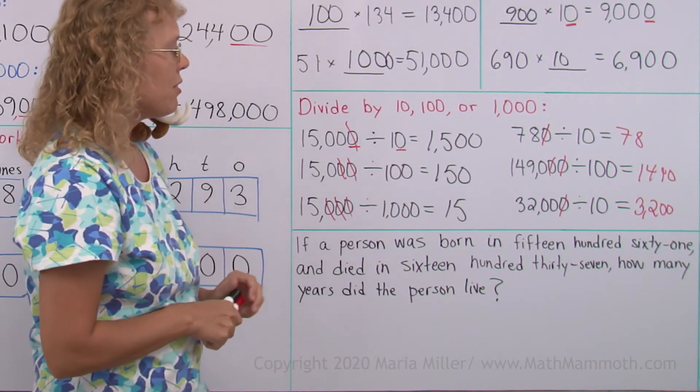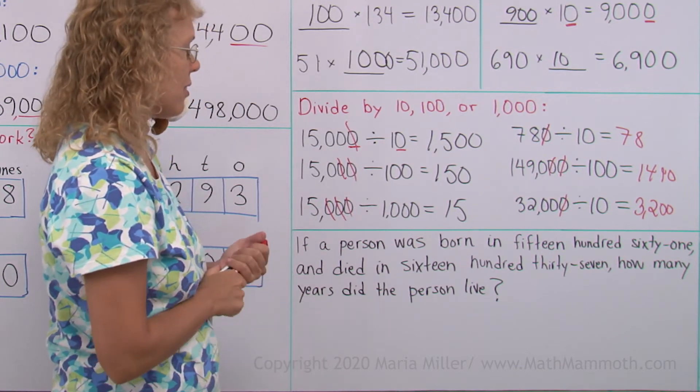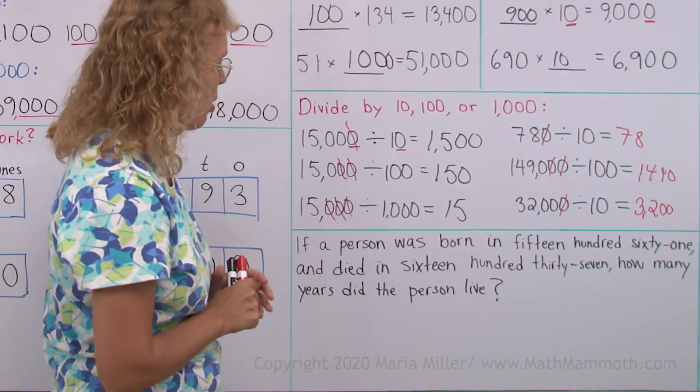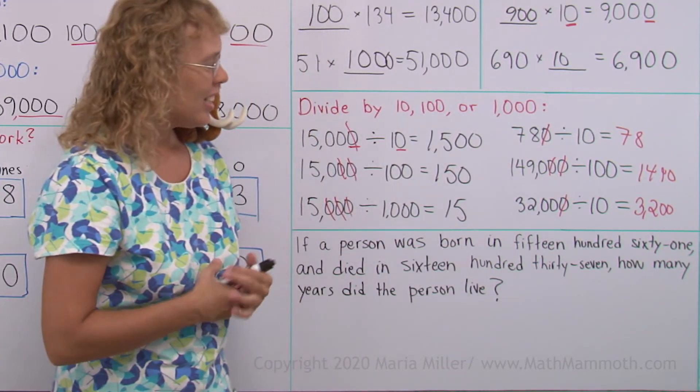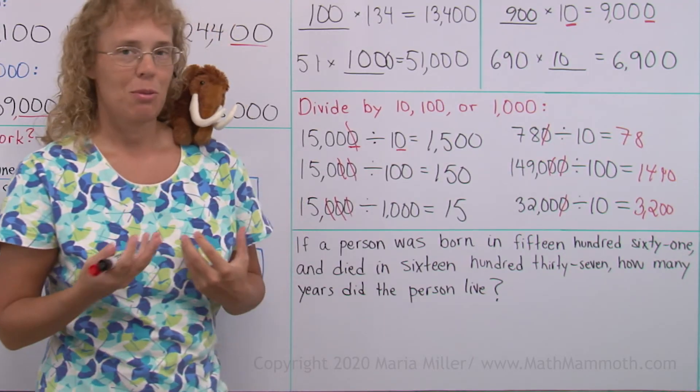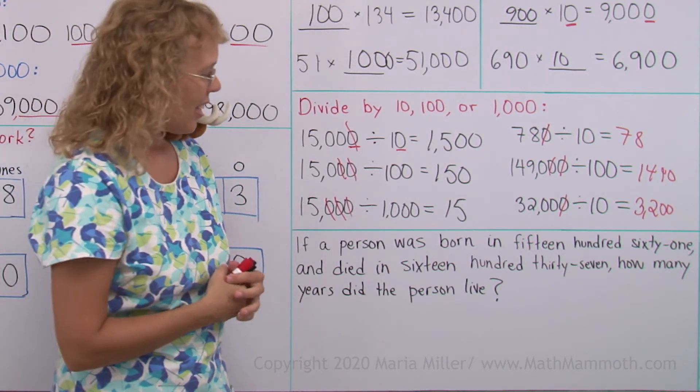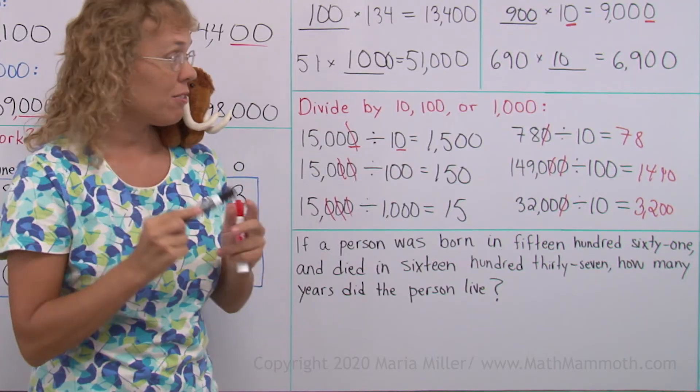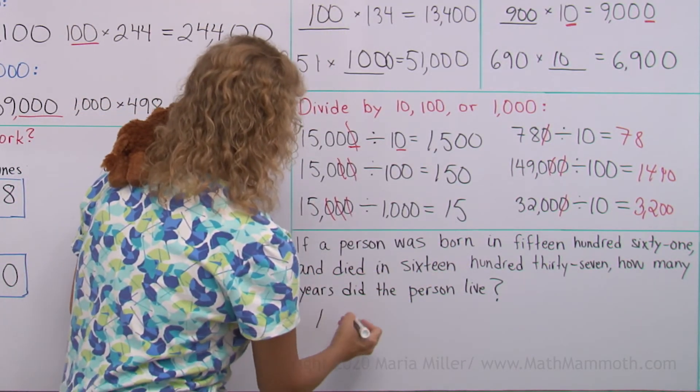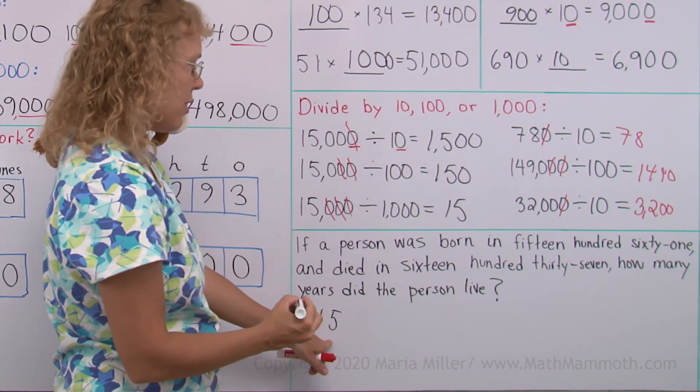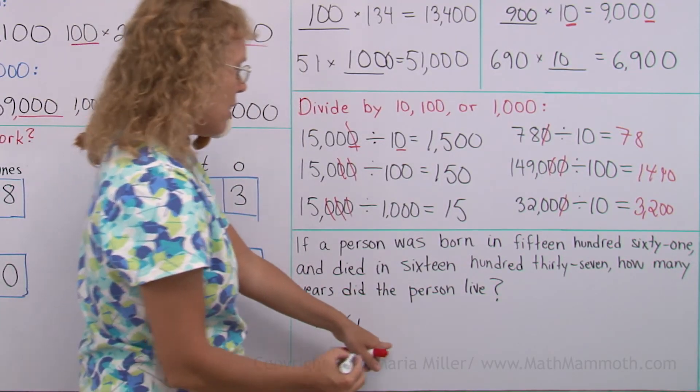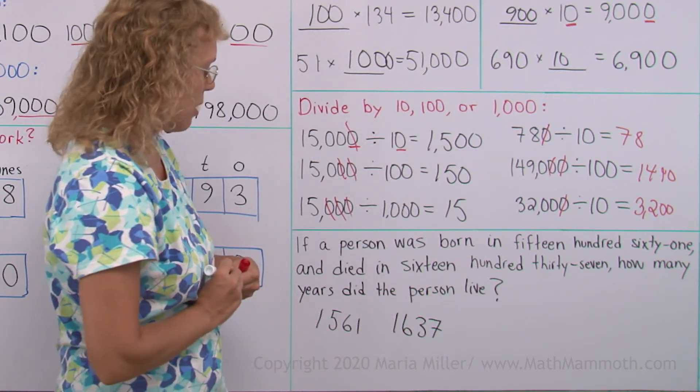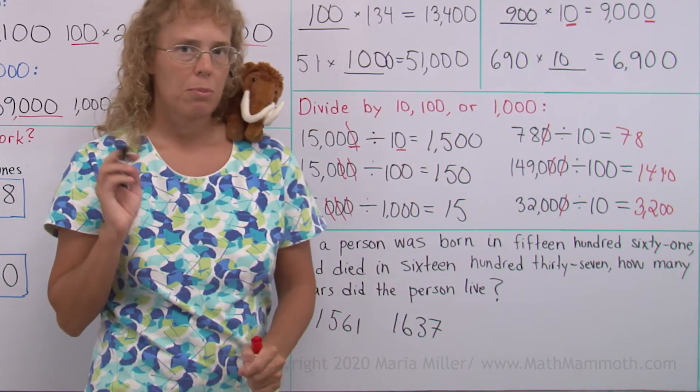If a person was born in 1561 and died in 1637, how many years did the person live? This is a common manner of reading year numbers, okay? 1561 or 1923 or so on. So 1500, what number is it? It would be 1,500, right? So I'm going to write these numbers, 1,500 would be the same as 1,500 and then 61, of course, like that. And the other, 1,600 and 37, like that. So those are year numbers. And now, how many years did the person live? You need to look at the difference.